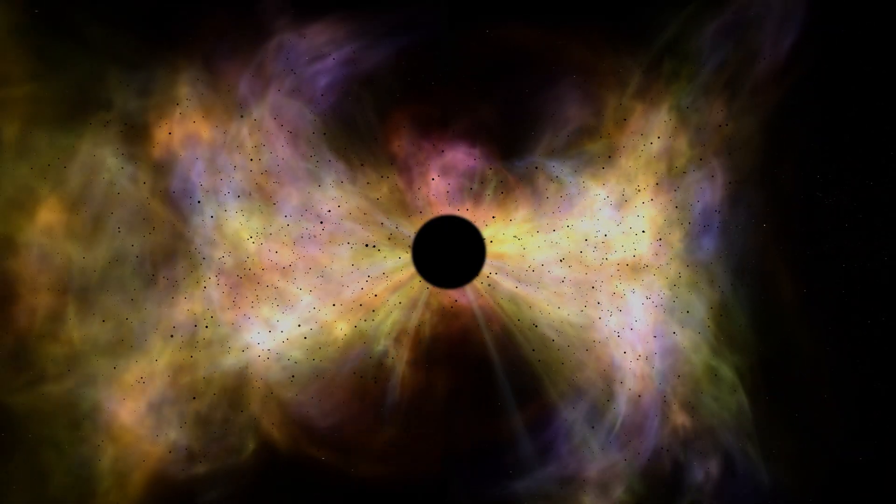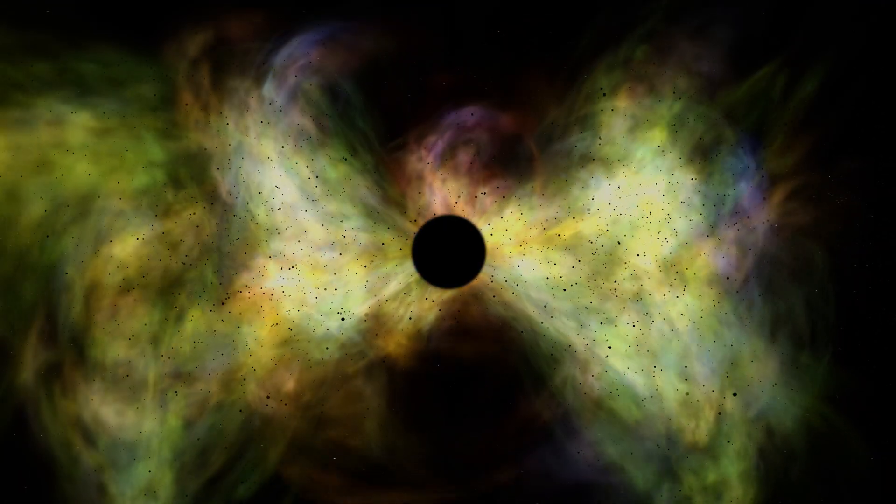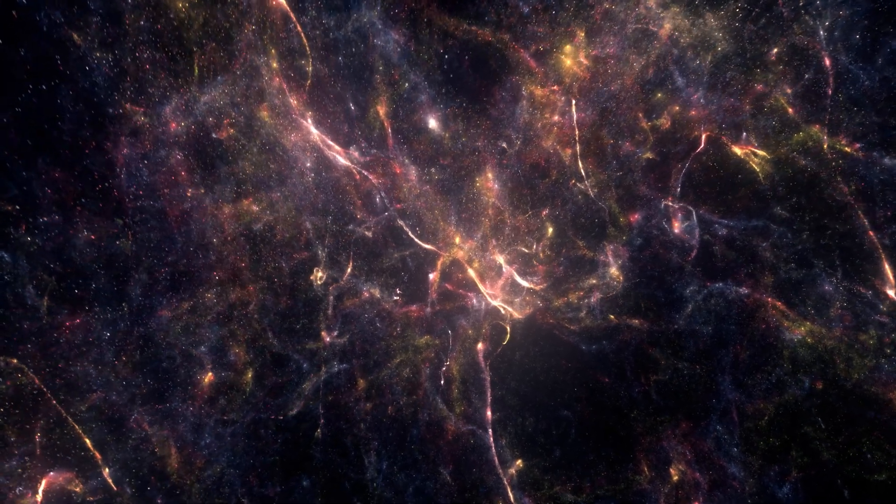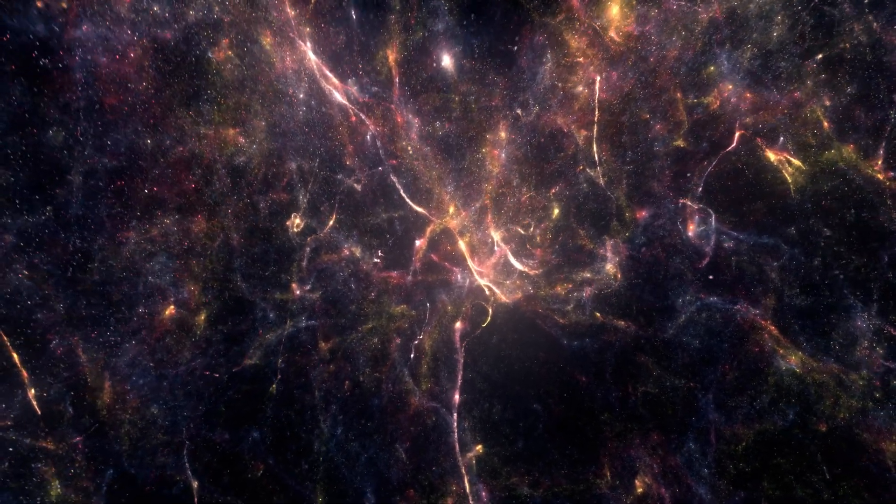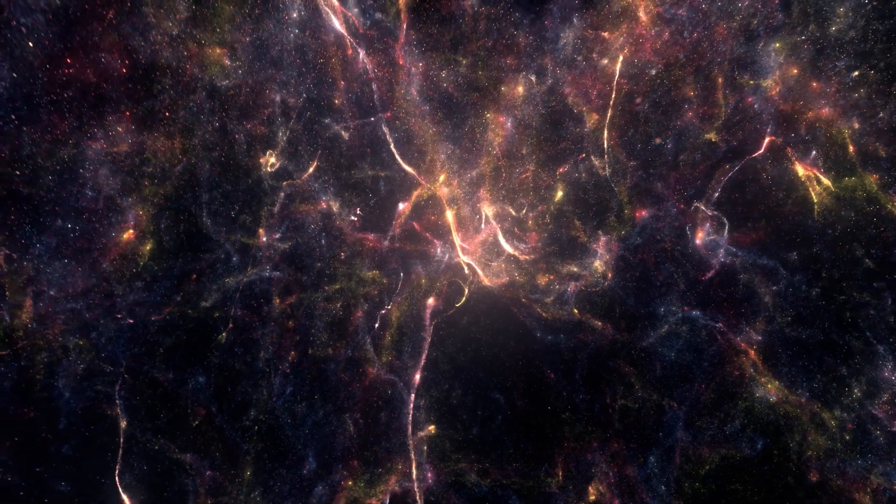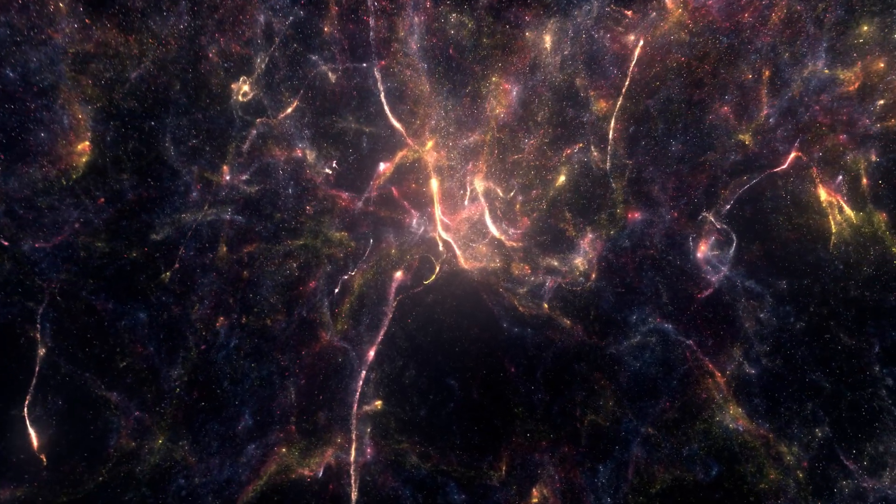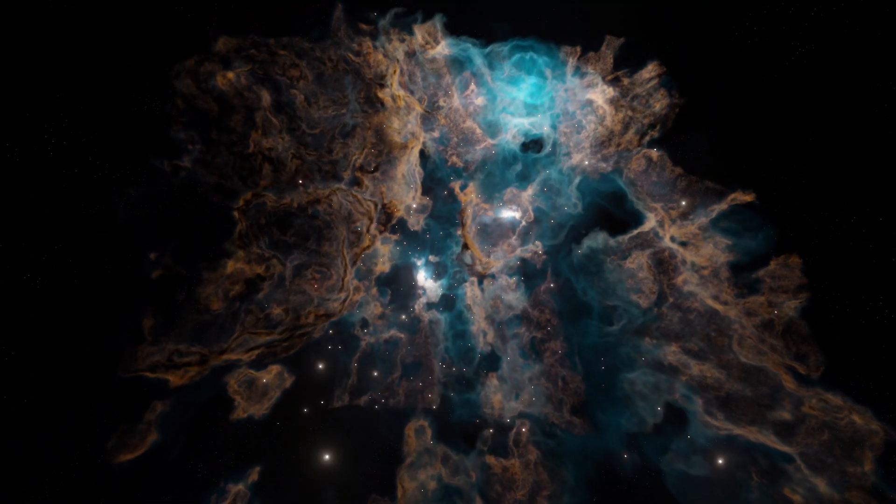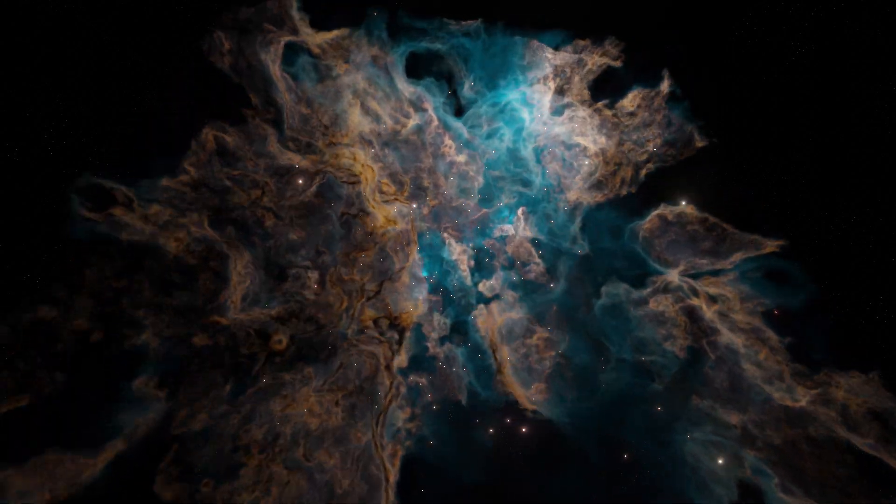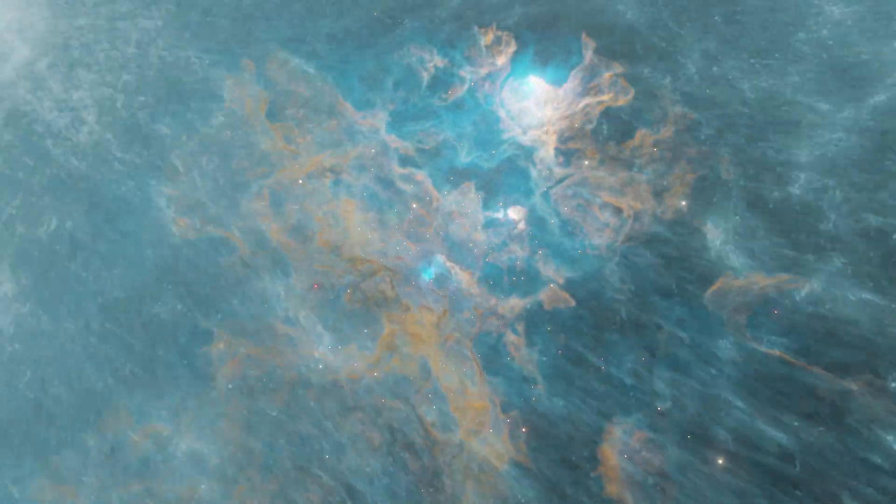Clouds of dust around black holes are a common feature. These clouds are formed from the debris of stars and other objects that have been torn apart by the black hole's intense gravitational forces. The dust clouds are often found in accretion disks, which are rotating disks of gas and dust that surround the black hole.